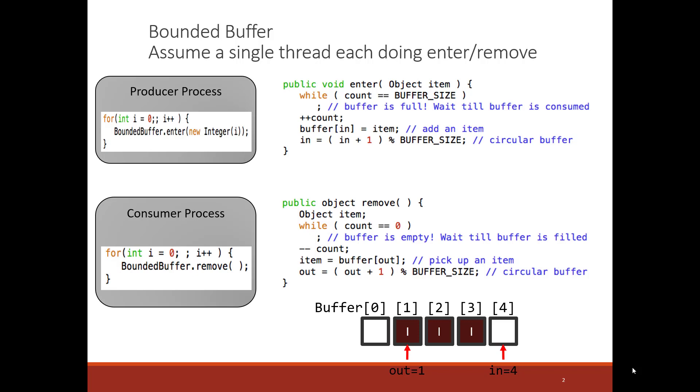Once we find that there's room for something in the buffer or there's something to be removed, on the remove call we go ahead and remove the item from the buffer and move forward the out pointer, which points to the next location in the buffer to remove something from. On the enter call, we correspondingly add something into the buffer and increase the in pointer. Pause this video and make sure that you understand the code before we go on.